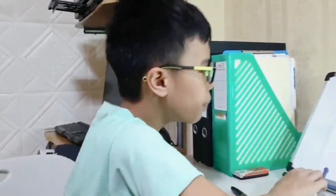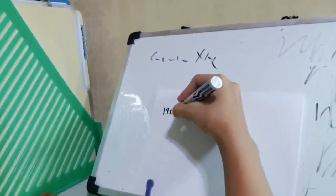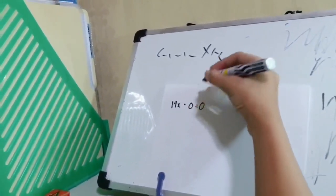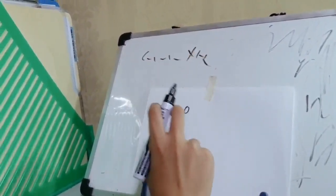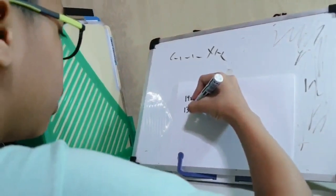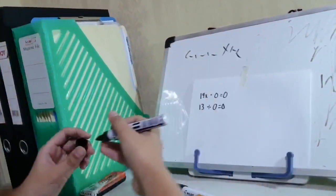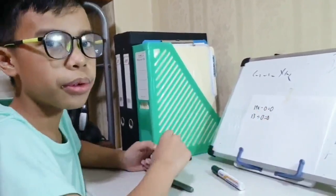And for our last property, it is the Zero property. It is when 0 multiplied or divided by any value or number is 0. For example, 14x times 0 equals 0. When you multiply anything by 0, it will result in 0. And for division: 0 divided by 13 is 0. Anything that is multiplied or divided by 0 is 0.